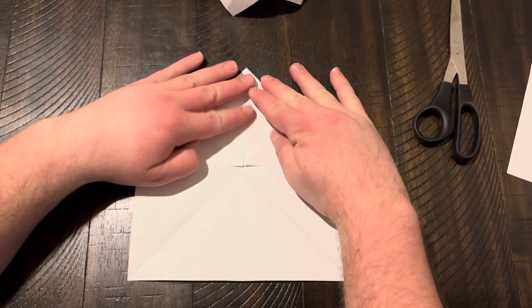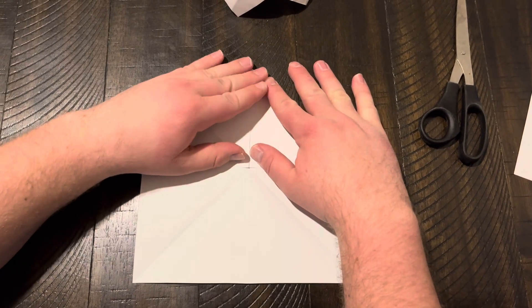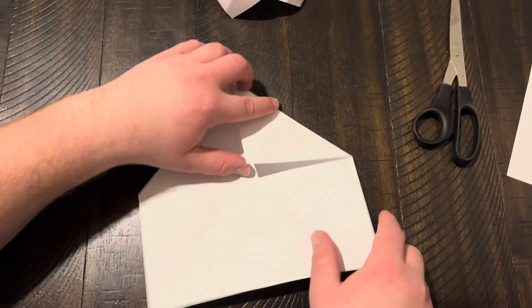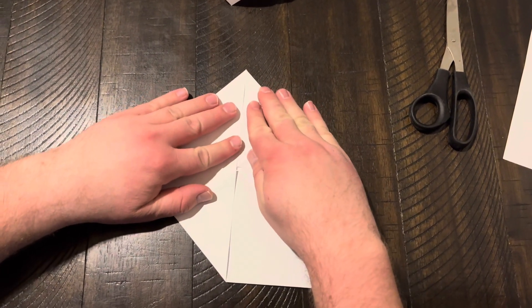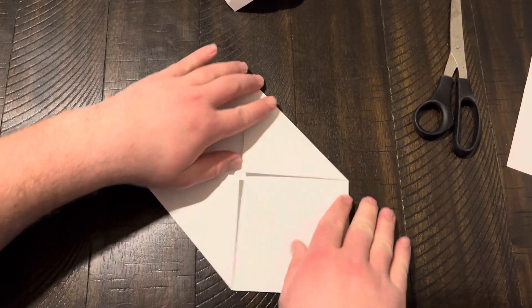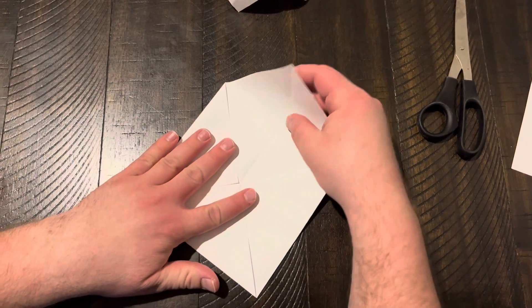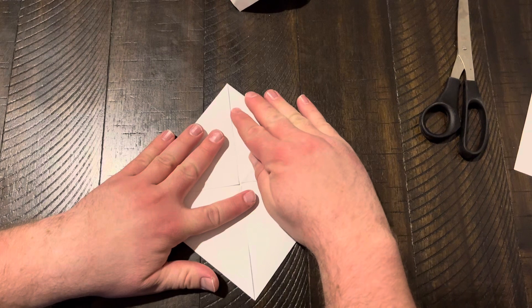We're gonna do this corner now, just like so, right where they meet up. Then we'll do this corner, right to the middle or as close as possible. And the last corner, just like that.